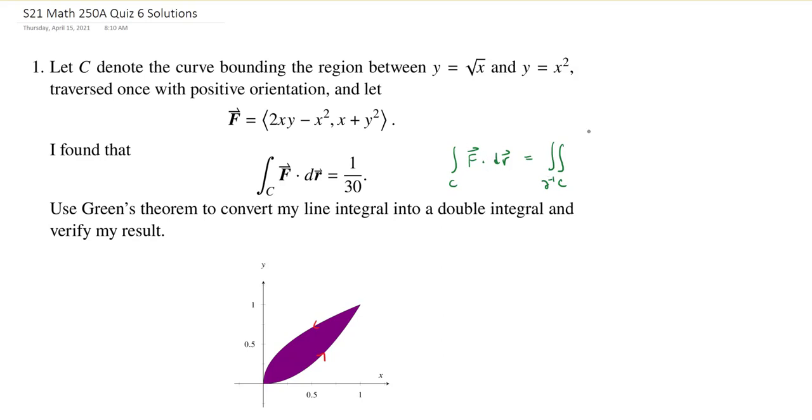We know that the line integral of the vector field F over C is going to be the same thing as the double integral over the region bounded by C. Instead of having the vector field, we take the curl. This is the 2D curl of the vector field, dA. So if we want to use Green's theorem to convert this into a double integral, we just need to compute this curl and the region bounded by the curve C.